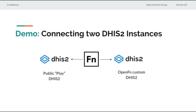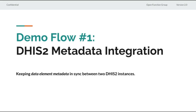To start, I'm going to walk you through a demo of how we might connect two DHIS2 instances. For this demo, we have set up a connection between our custom OpenFunction DHIS2 instance as well as the Public Play DHIS2 instance, which you might have interacted with at play.dhis2.org. We're going to walk through first a metadata integration — how do we keep DHIS2 configuration between two systems in sync?